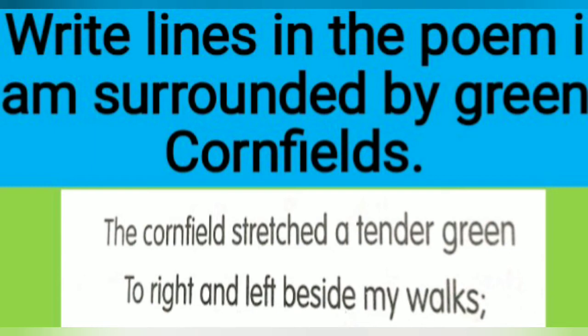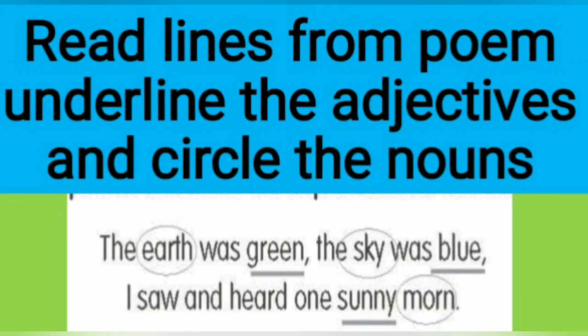Next question: write the lines from the poem that mean 'I am surrounded by the green cornfield.' Answer: the cornfield stretched a tender green to right and left beside my walks. Question six: read the lines from the poem, underline the adjectives and circle the nouns. The nouns are earth, sky, and morning. The adjectives are green, blue, and sunny.